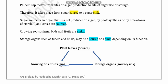Growing roots, stems, and buds are normally sinks because they are growing points of the plant. Storage organs like tubers and bulbs can sometimes be a sink. Plant leaves are normally sources because they are the site of sugar production by photosynthesis. However, a storage organ can act as a source when it converts stored starch into sucrose and passes it to the growing tip. So a storage organ can be either a source or a sink.